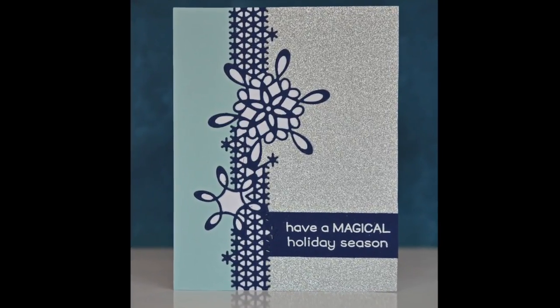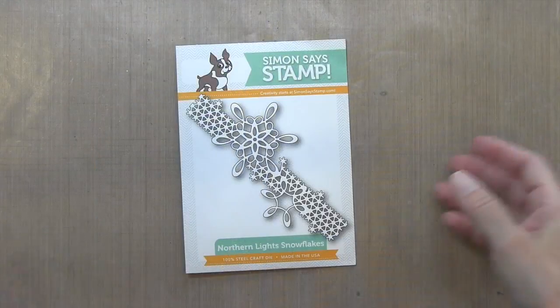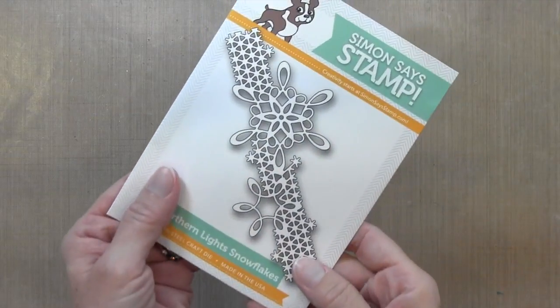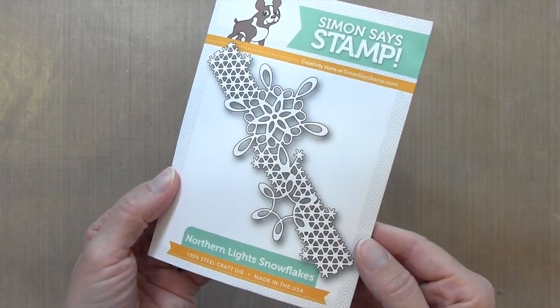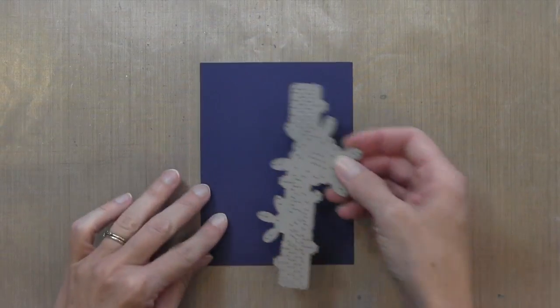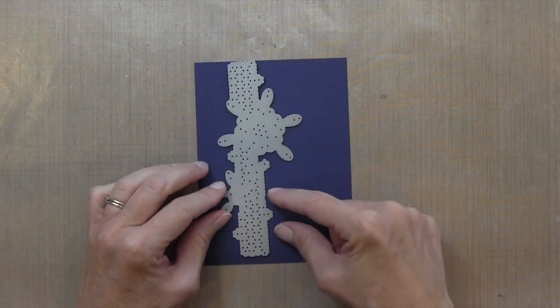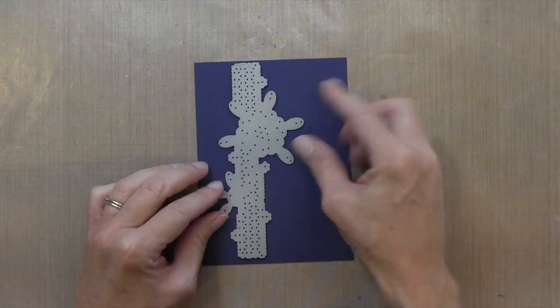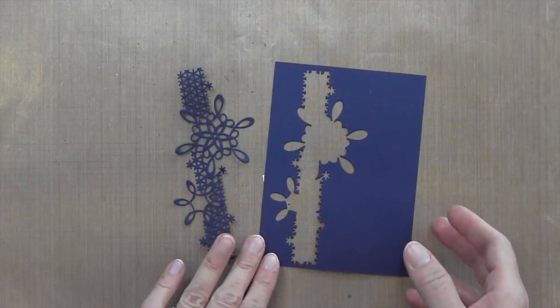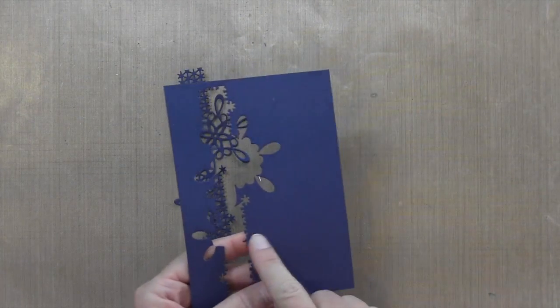Hi everyone, it's Darlene. Welcome back for another card video. This card is pretty simple, mostly die cutting. I'm using this Northern Lights Snowflakes die by Simon Says Stamp, one of their new release dies. I'm going to cut this die out of a piece of Night of Navy Stampin' Up cardstock. You can see I'm leaving room at the bottom for a sentiment.